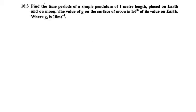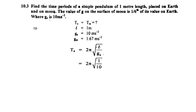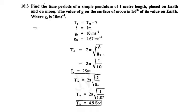In the third numerical, we have given the length of the pendulum which is 1 meter and the gravitational acceleration on the surface of Earth is 10 meters per second squared, and on the Moon it is 1.67 meters per second squared. We have to find the time period on the surface of Earth as well as on the Moon. The formula used is T is equal to 2pi under root L over G. For Earth, Te is equal to 2pi under root L over GE. Putting the values, we get the answer 2 seconds. Similarly, for the Moon, Tm is equal to 2pi under root L over GM, giving the answer 4.9 seconds.